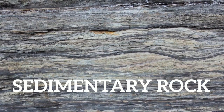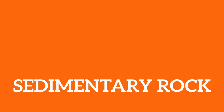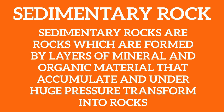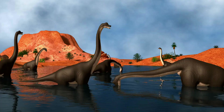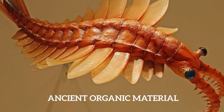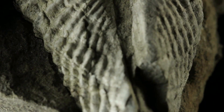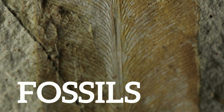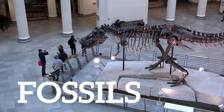It's time to move on to a different category of rock: sedimentary rock. You may be asking yourself, what is sedimentary rock? These are rocks which are formed by layers of mineral and organic material that accumulate and, under huge pressure, transform into rocks. This takes millions and millions of years. All these layers of organic matter — dead animals, dead plants — build up over time and transform into rocks, and sometimes we can see the imprint of these animals and plants in the rocks, which are called fossils.